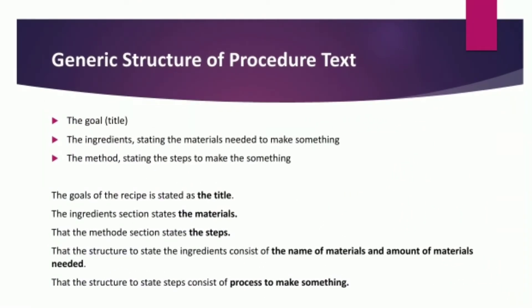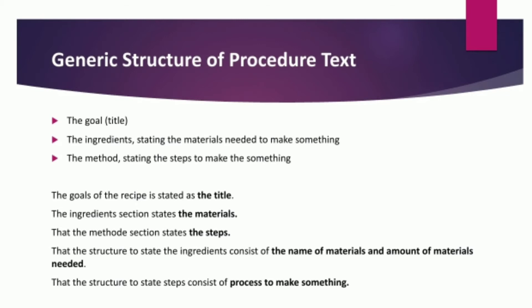The generic structure of procedure text is: first, the goal or title; second, the ingredients, stating the materials needed to make something; and last, the method, stating the steps to make something. The goals of the recipes are stated as the title. The ingredients section states the materials, and the method section states the steps. The ingredients consist of the name and amount of materials needed.